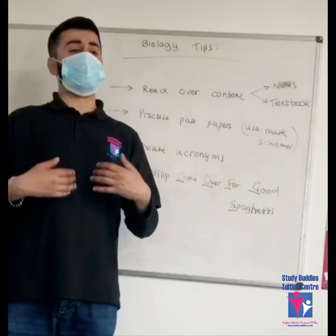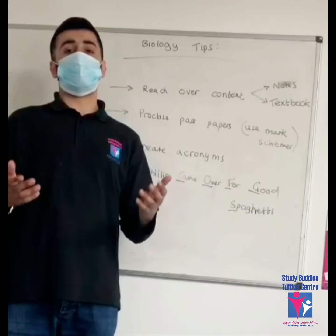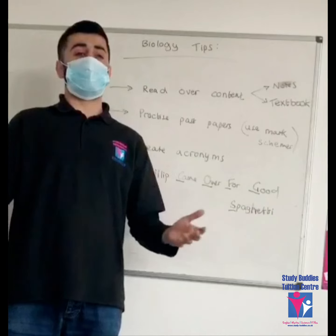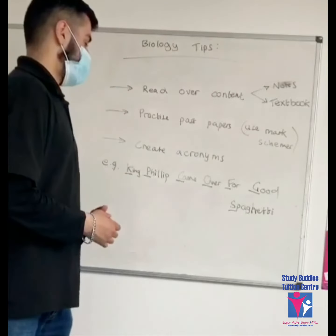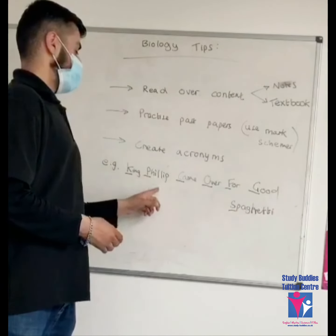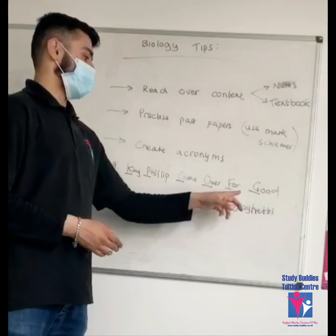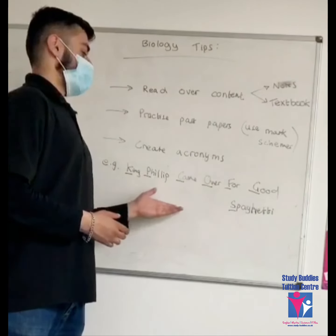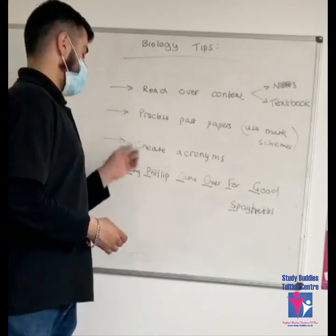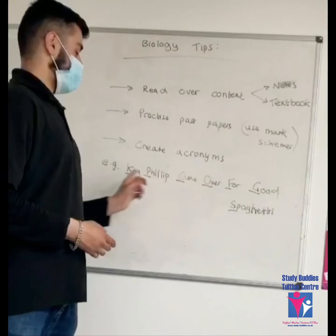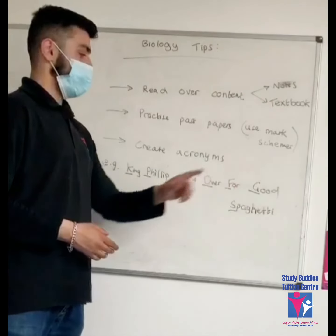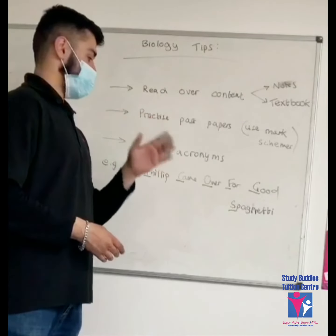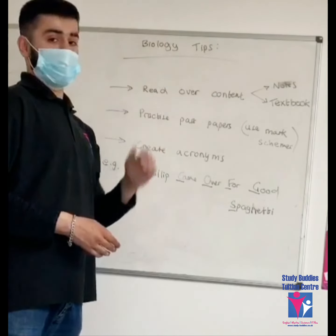For instance, as humans there are seven steps of classification in the world for all living organisms. If you see this sentence — 'King Philip came over for good spaghetti' — you would think that sentence means nothing. But by looking at it, the first letter of every word represents one of the seven stages in the classification order.